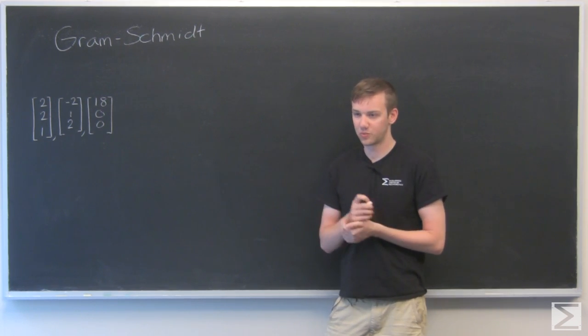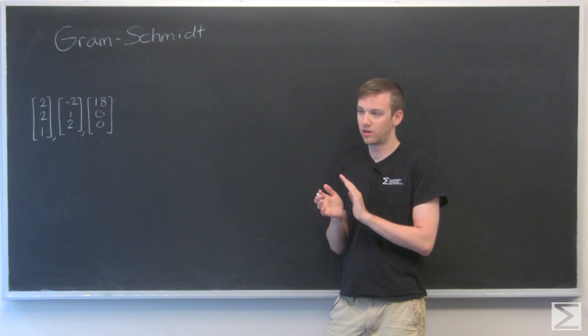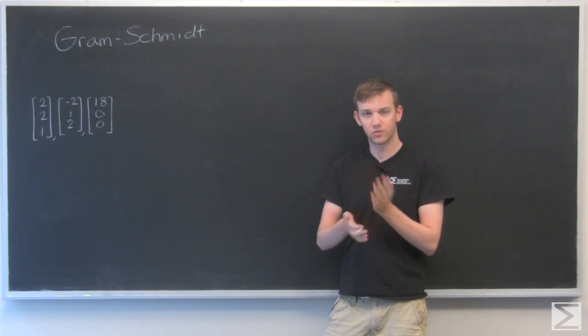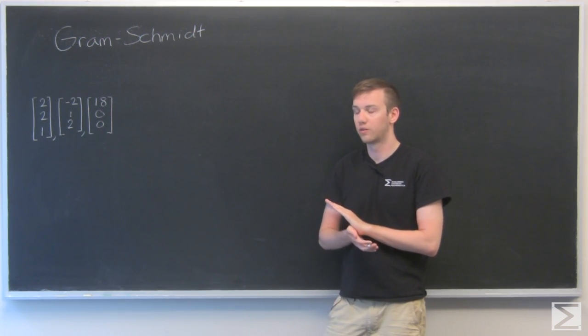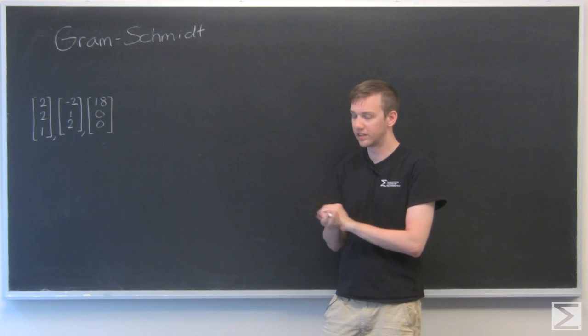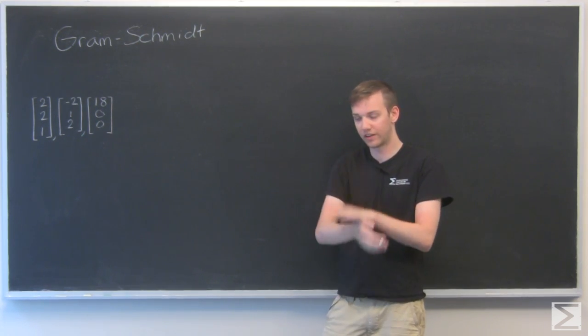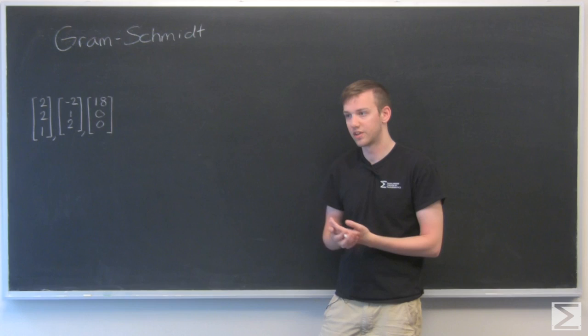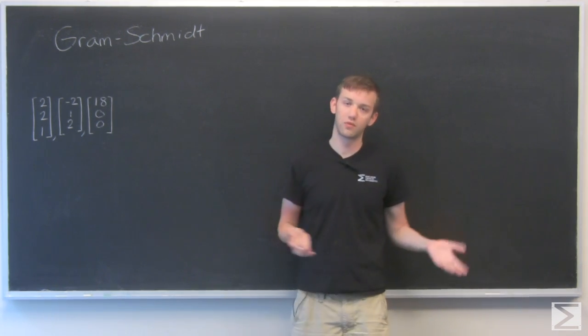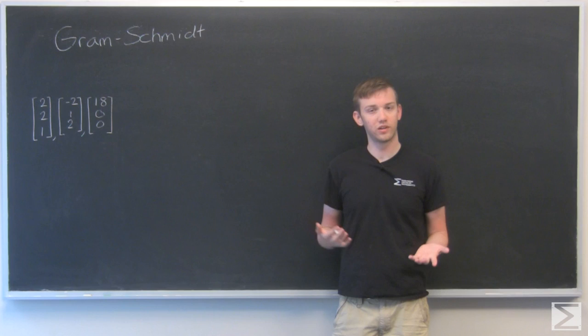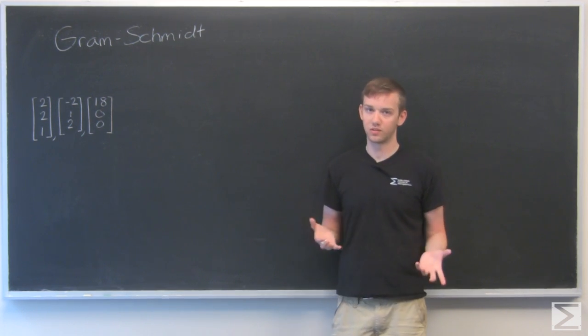An orthonormal basis is where we have multiple vectors. They are all at right angles to each other. That's where we get the word orthogonal. They're all linearly independent, obviously, because they're at right angles. And they're all unit vectors as well. So given just a random set of vectors, how are we going to go about making them all right angles and making them all unit vectors?